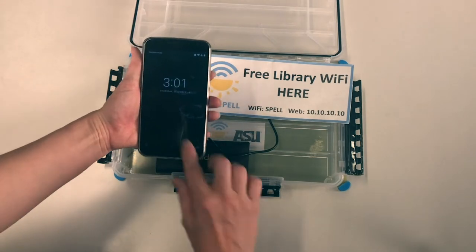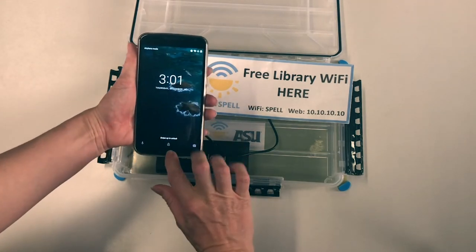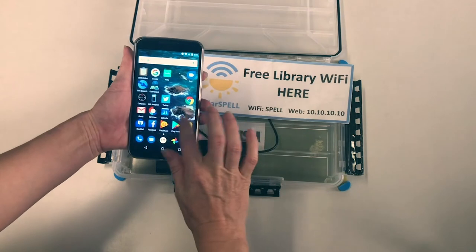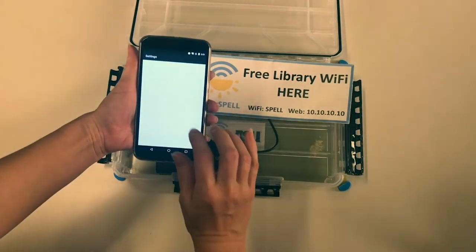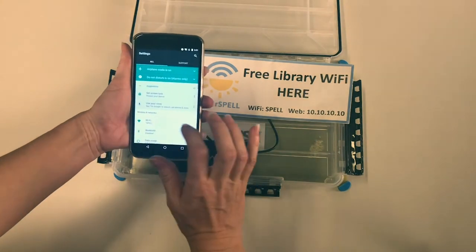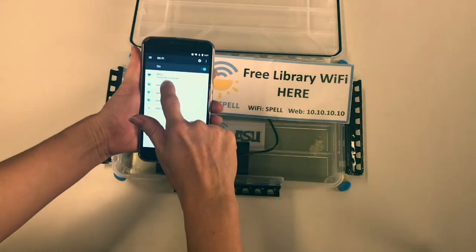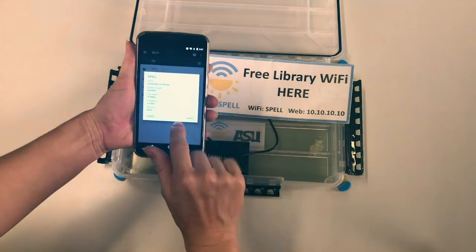To connect to the Solar Spell Digital Library's website, we'll go to Settings and look for a Wi-Fi signal called Spell. We'll connect to the Spell Wi-Fi signal, and here we're connected.